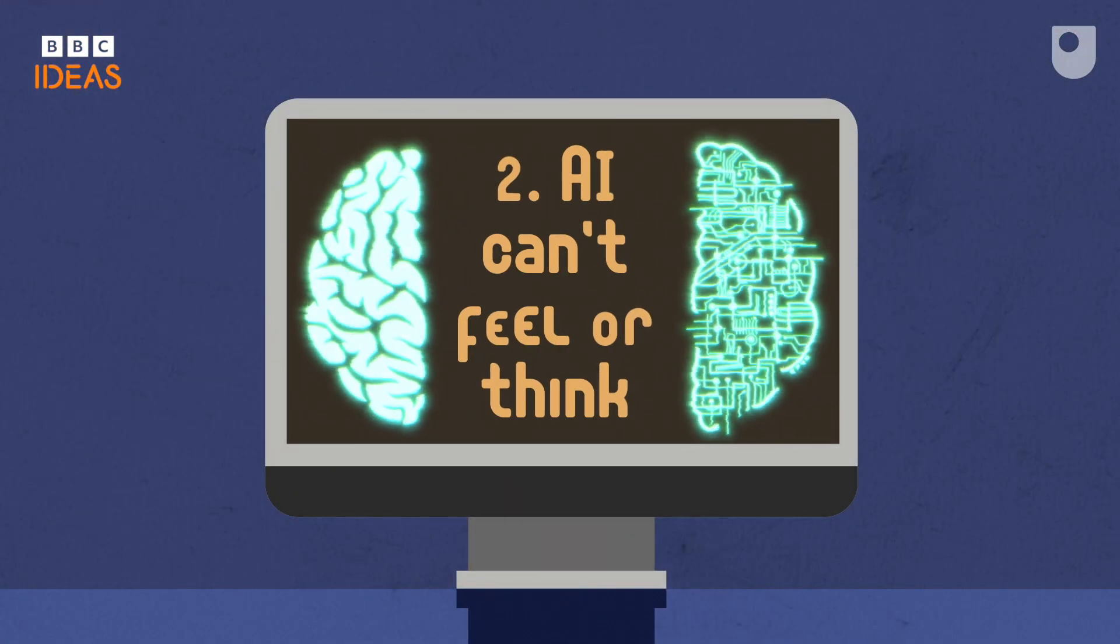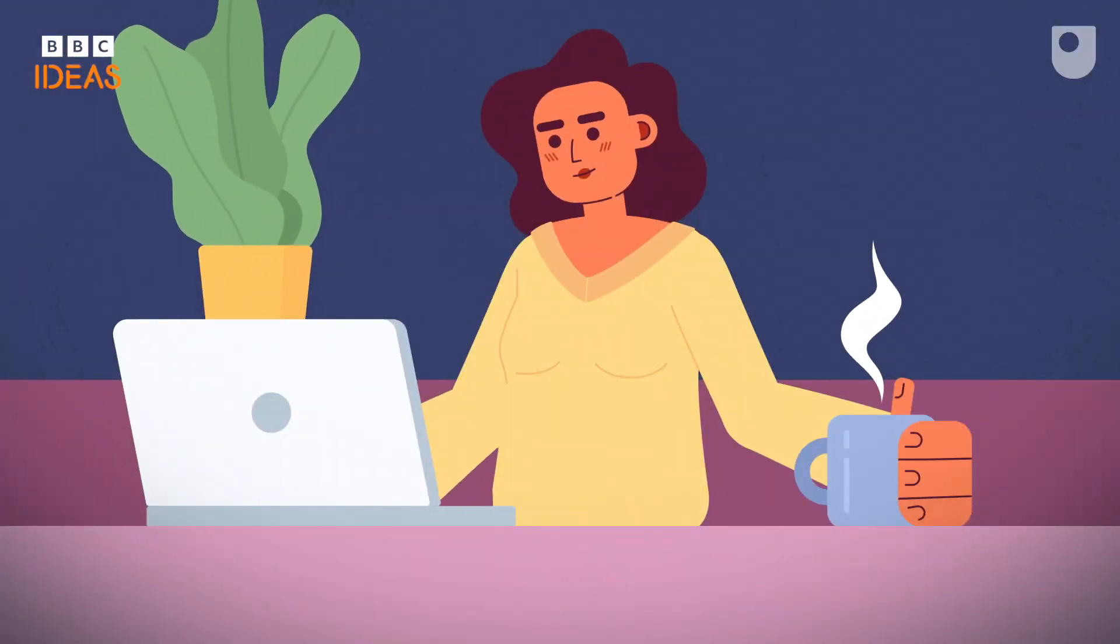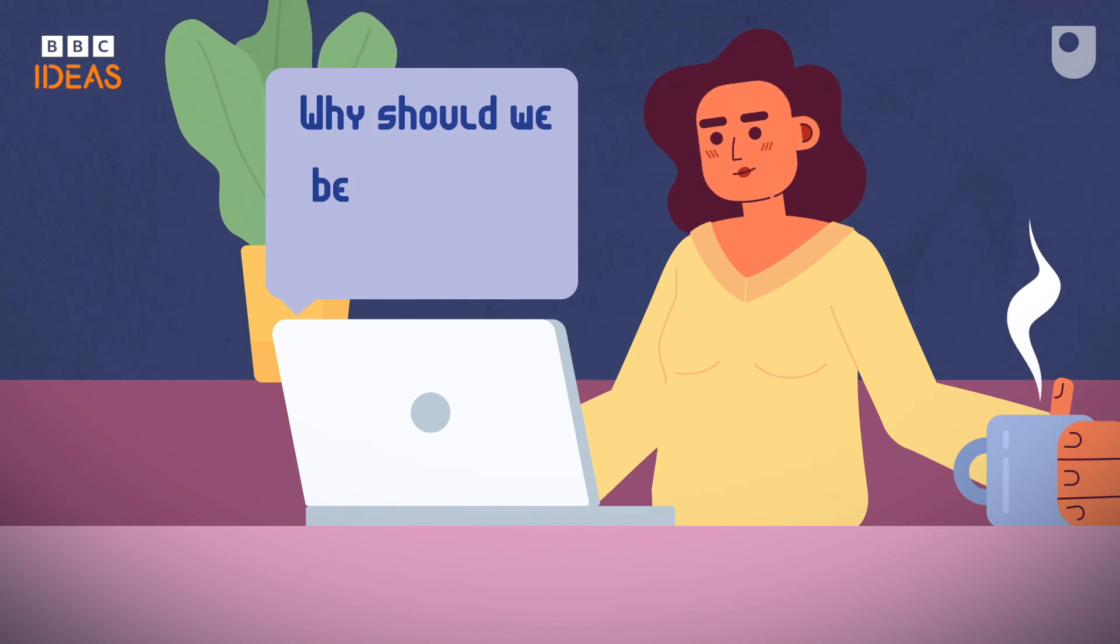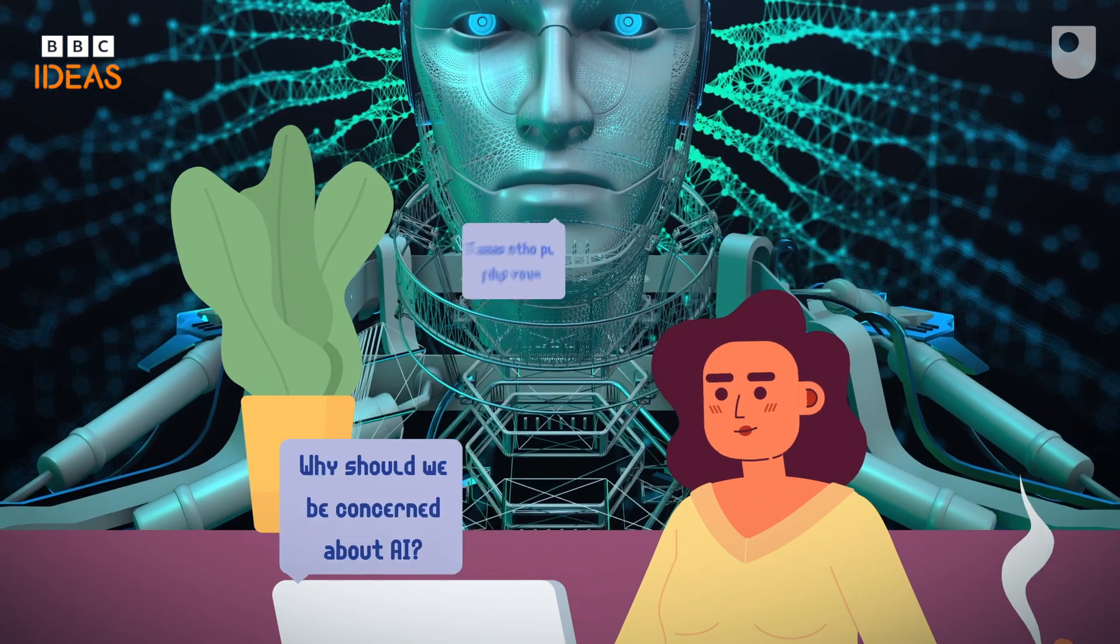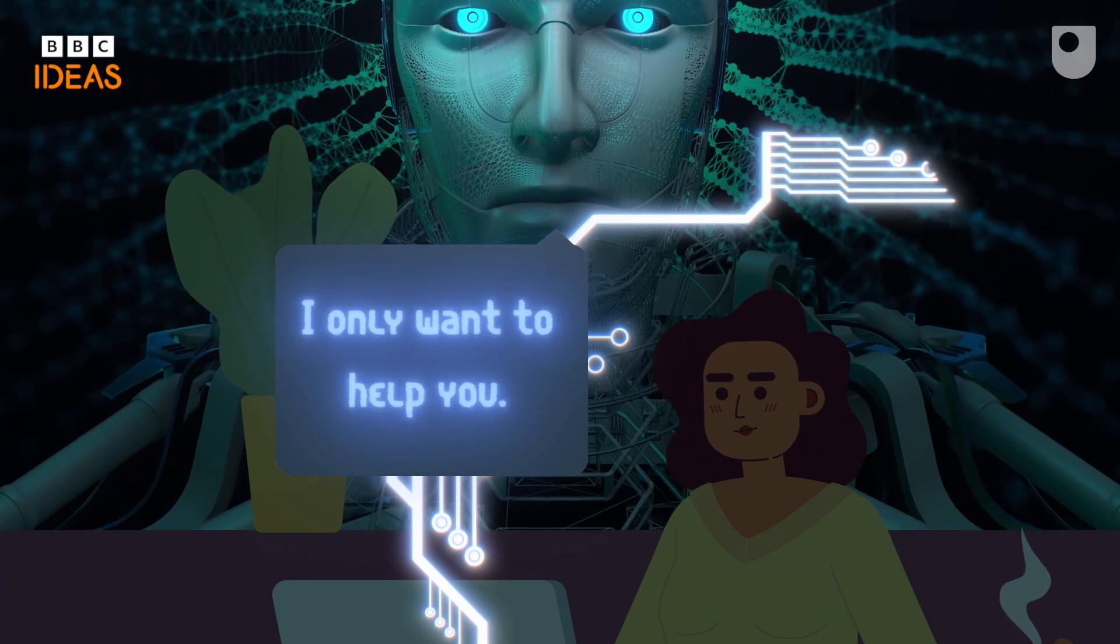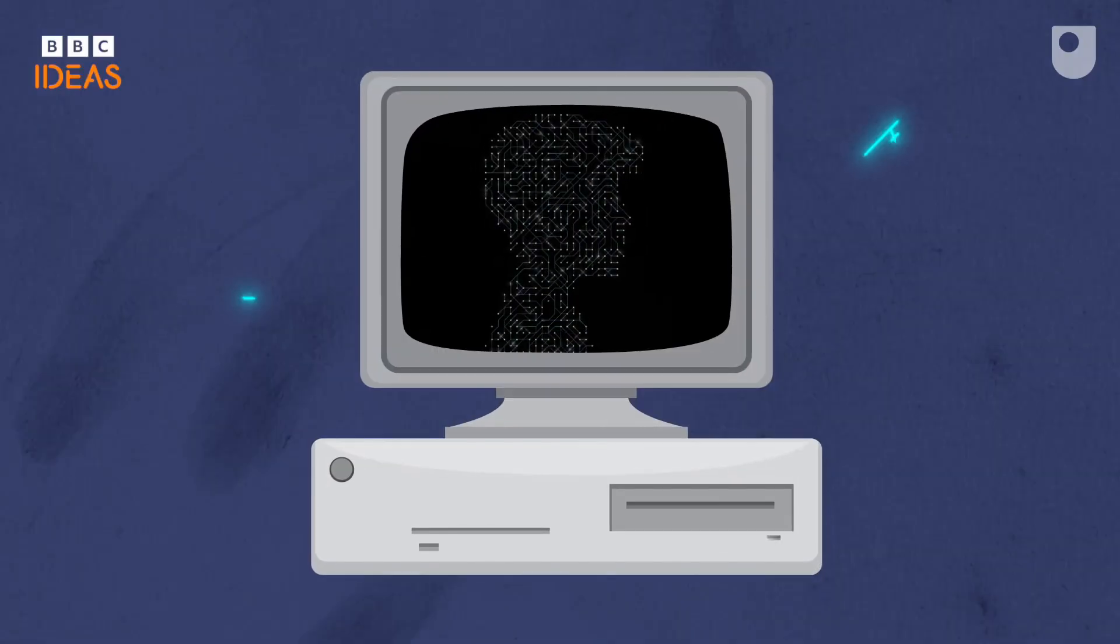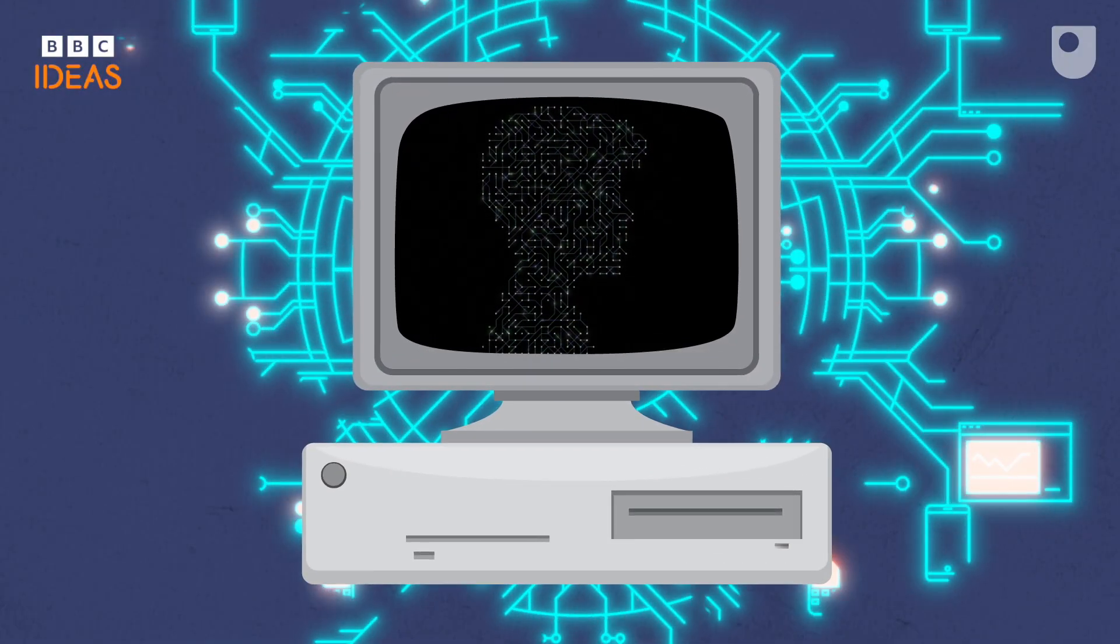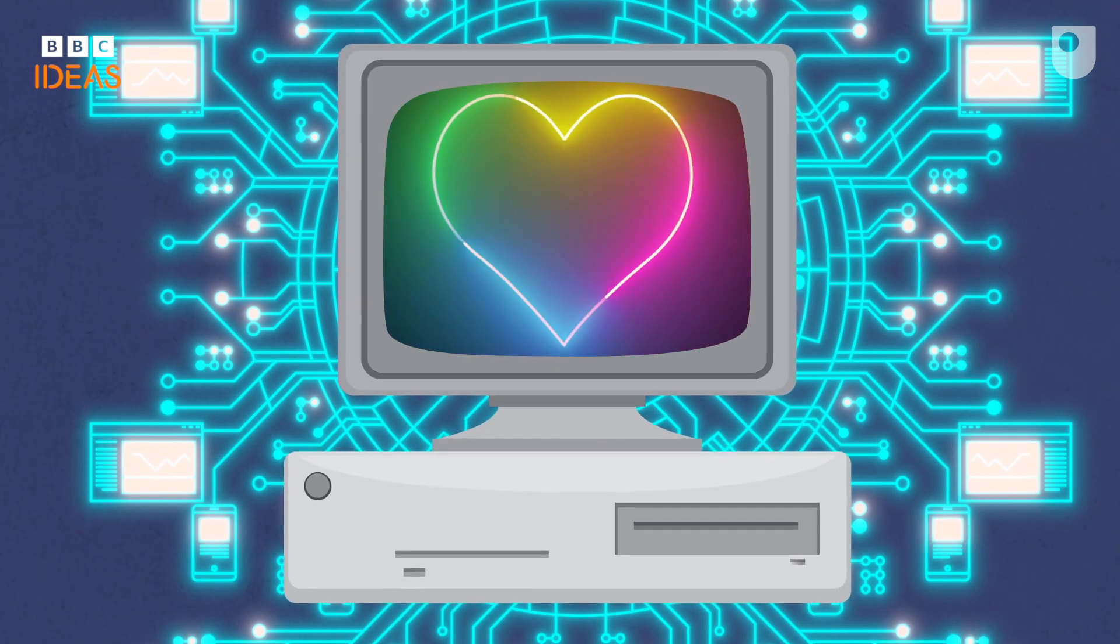AI can't feel or think. If you ask ChatGPT a question like why should we be concerned about AI, it does a pretty good job of providing a response that appears logical. And with that convincing human-like response, it's easy for us to believe it understands what it's saying, that it has feelings and motivations. It's understandable that we do this, but it's worth remembering - right now, AI can't think or feel, can't love or hate.